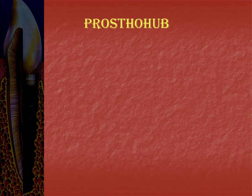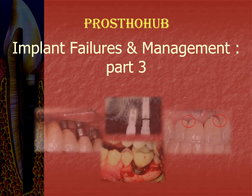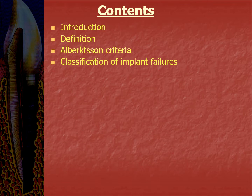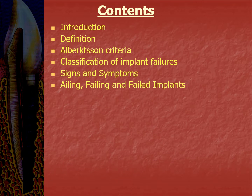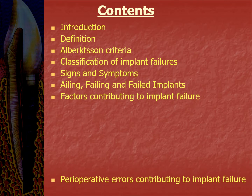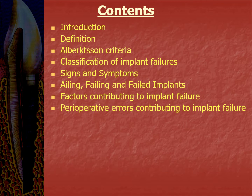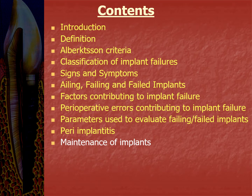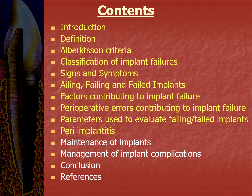Hello everyone, welcome back to ProstoHub. We are discussing the final session of our topic on implant failures and management. In our previous two sessions we discussed introduction, definition, Albertson criteria for implant success, classification of implant failures with signs and symptoms, failing and failed implants, factors contributing to implant failure, perioperative errors, parameters used to evaluate a failing or failed implant, and peri-implantitis in detail. In this session we will complete the topic by discussing implant maintenance, management of various implant complications, and conclusion.